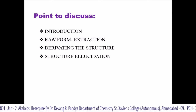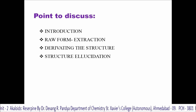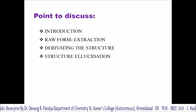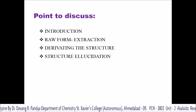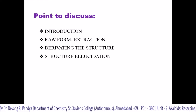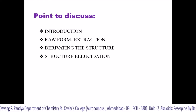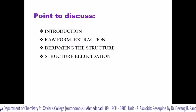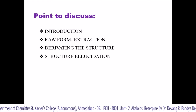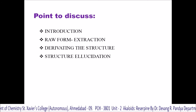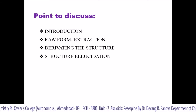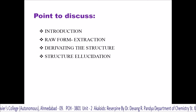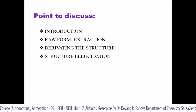Other important alkaloids are Yohimbine, Ajmaline, and Ajmalicine. For centuries, Rauwolfia serpentina, which is from the family Apocynaceae, was used by Ayurvedic physicians in India to treat a variety of maladies ranging from snakebite to insanity.